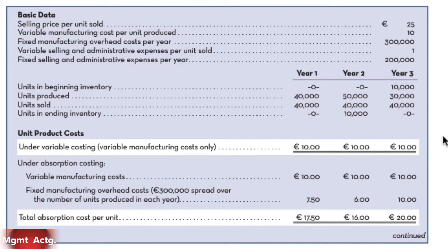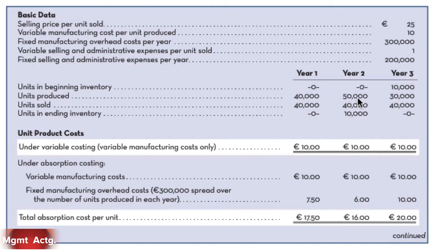Our variable manufacturing cost per unit in this example is going to be $10. Our fixed manufacturing overhead cost per year is $300,000. We have an issue here because our units produced are not the same each year, so our fixed overhead cost per unit is not the same each year. We're going to make 40,000 units in year one, increase to 50,000 units in year two, and then drop down to 30,000 units in year three. Under variable costing, we have a constant cost of $10 per unit. To that, we add our fixed manufacturing costs to get to absorption costing. In year one, $300,000 divided by 40,000 units — we'll add $7.50.